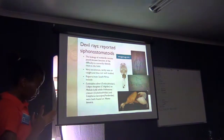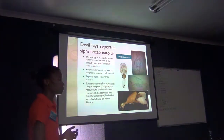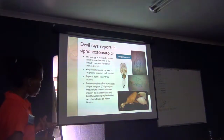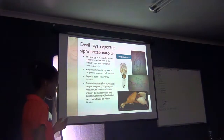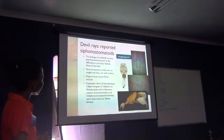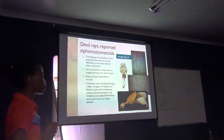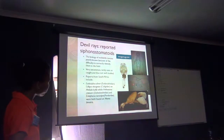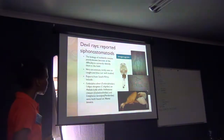In South Africa, copepods that have been reported from mobula rays include four species distributed in four families. In the family Eudectylinidae, we have Eudectyna olivieri. In Caligidae, we have Caligus elongatus. Both of these have been reported from the short-horned devil ray Mobula kuhlii. And then we have two more species reported from Manta birostris: Interferous naminipersia and Anthosoma crassum.